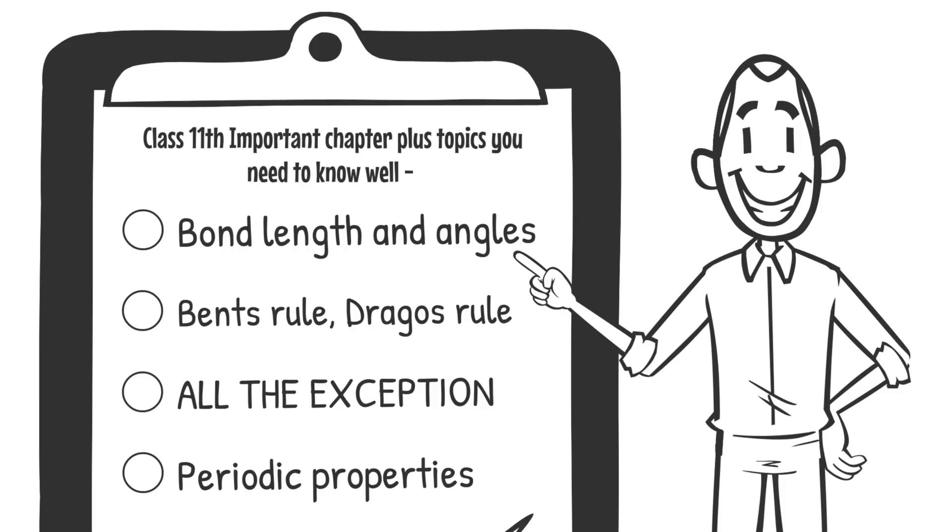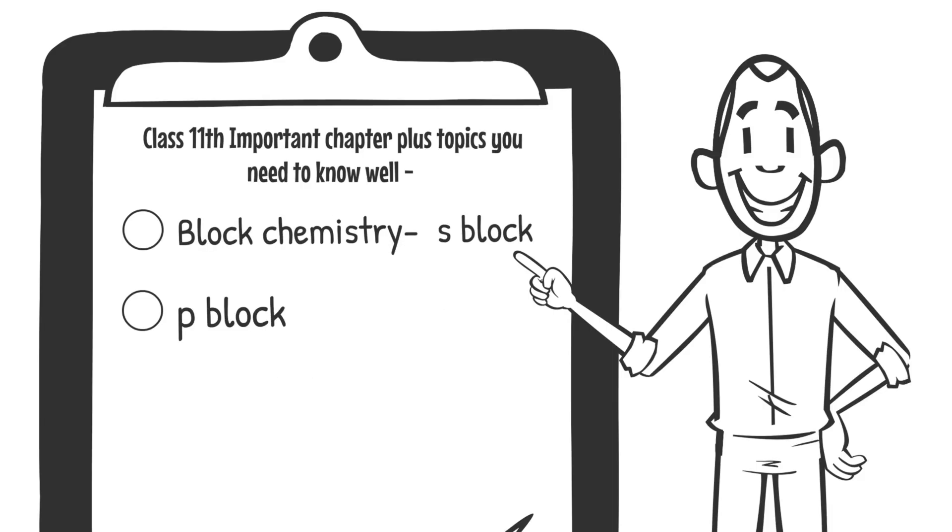Now, one more chapter which has at least one question in the paper is periodic properties. It's easy plus a guaranteed question you can expect. Now, block chemistry, S block and P block. They are very much asked questions, very much asked chapters. Make sure you do them well.